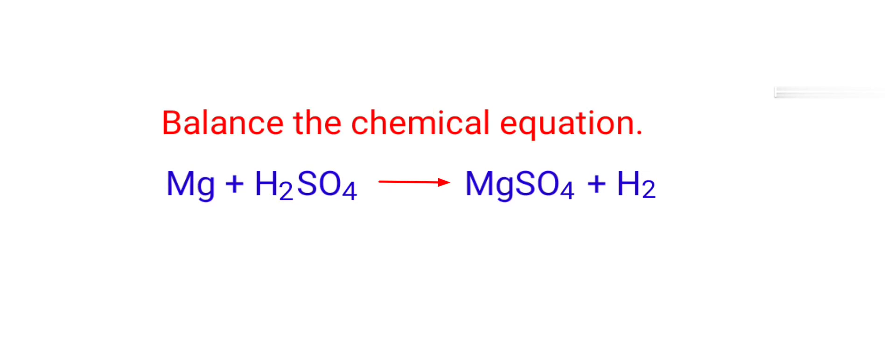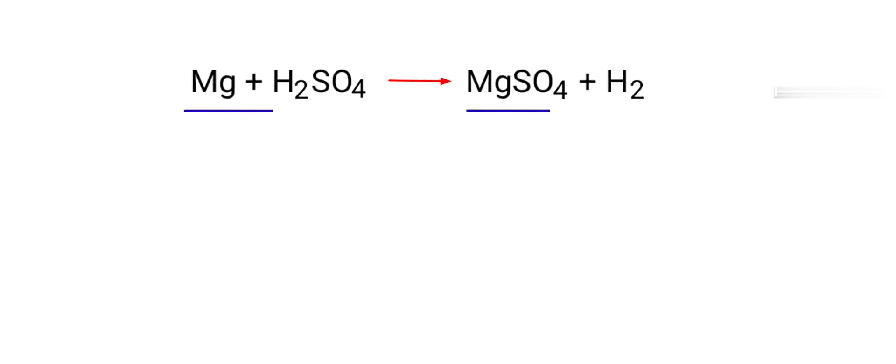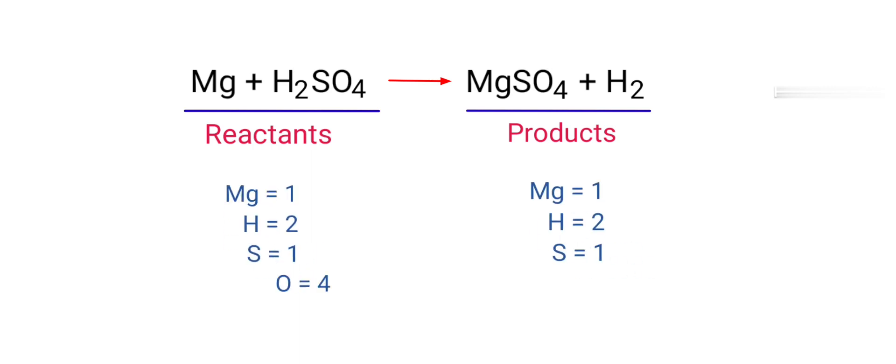The balanced chemical equation: magnesium plus sulfuric acid gives magnesium sulfate plus hydrogen. In this equation, the reactants are magnesium and sulfuric acid, and the products are magnesium sulfate and hydrogen. If you observe this equation, the number of atoms on the reactants side is the same as the number of atoms on the products side.